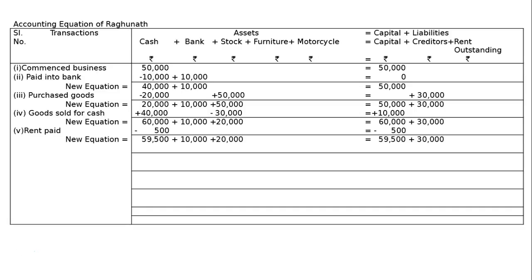Sixth transaction: rent outstanding Rs. 100. This is an expenditure — it will reduce capital by Rs. 100 and increase the liability of outstanding rent by Rs. 100. There will be a plus minus zero, and we get a new equation.